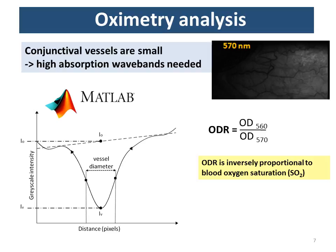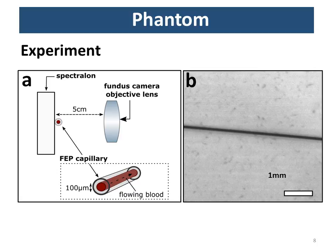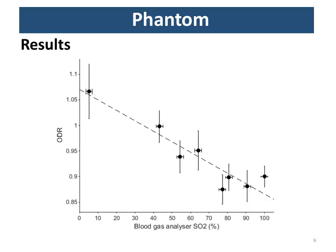To validate the oximetry capability of these wavelengths, we constructed a simple phantom consisting of a piece of Spectralon to simulate the sclera — a white diffuse reflectance material with uniform reflection in the visible wavelength range — and a 100 micrometre FEP capillary filled with ex vivo flowing blood. We found that optical density ratio did indeed follow an inversely proportional relationship to oxygen saturation as measured by a blood gas analyser.